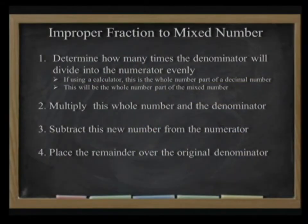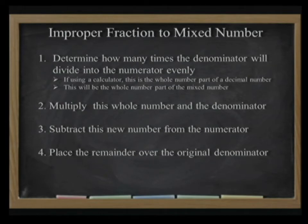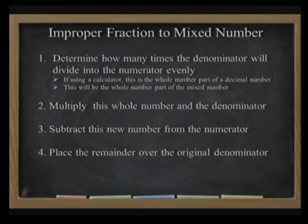Now that we have the answer to our last problem, which was 43 over 15, this was an improper fraction. We're going to change the improper fraction into a mixed number. To do this, we have to determine how many times the denominator will divide into the numerator evenly. If you are using a calculator, this is the whole number part of a decimal number, which will also be the whole number part of the mixed number. Then we'll multiply this whole number and the denominator. Once again, we'll place the remainder over the original denominator.